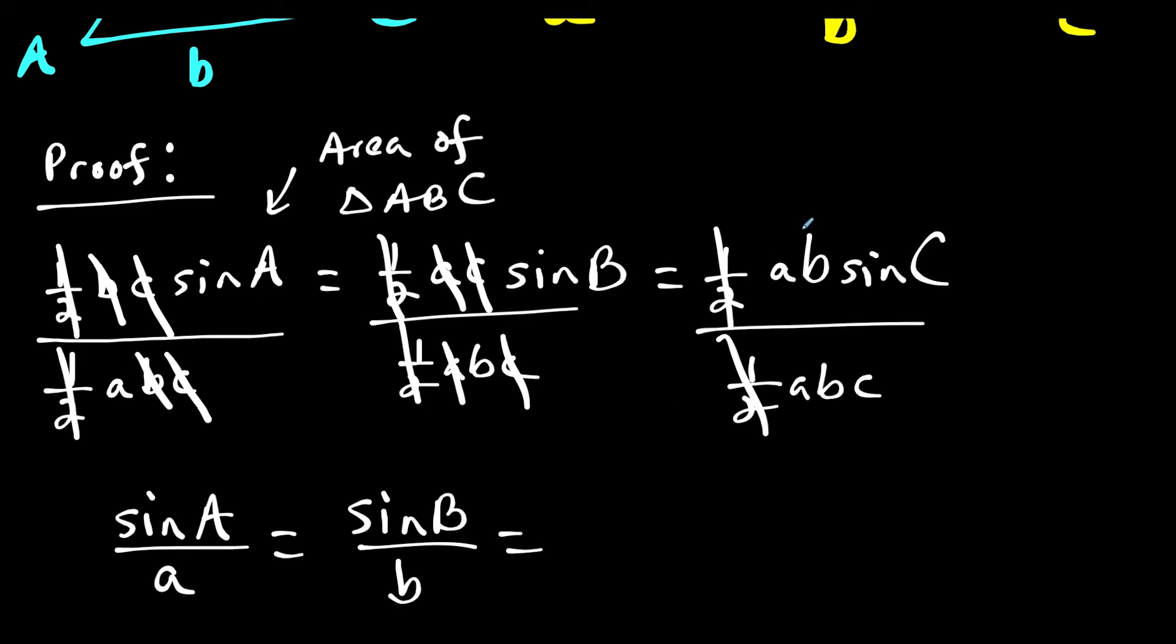And now on the third part of this equation, A over A cancels, B over B cancels, and we're left with sine of angle C over side C. And there's our formula for the law of sines.